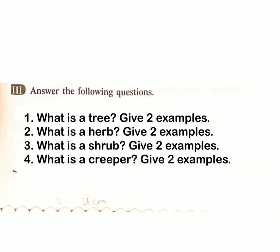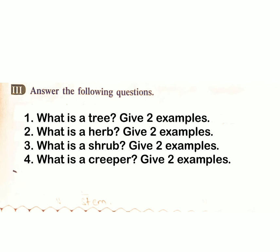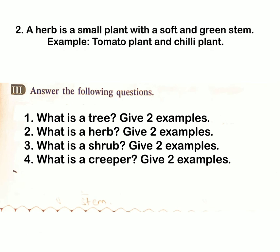Answer the following: 1. What is a tree? Give two examples. Answer: A tree is a big plant with a large, hard, and strong stem. Examples: mango tree and coconut tree. 2. What is a herb? Give two examples. Answer: A herb is a small plant with a soft and green stem. Examples: tomato plant and chili plant.